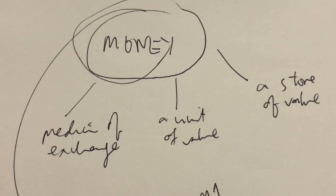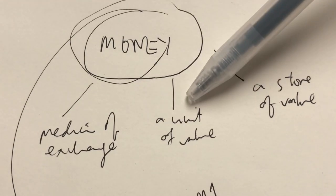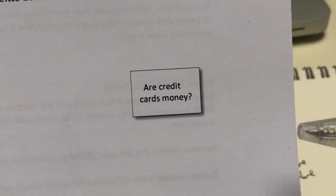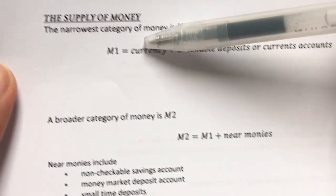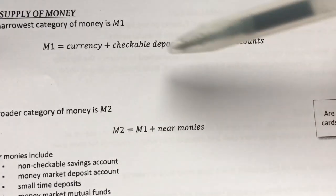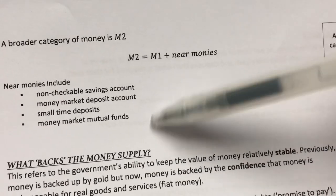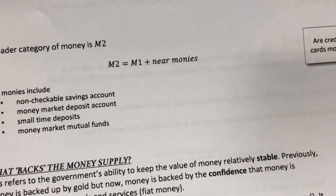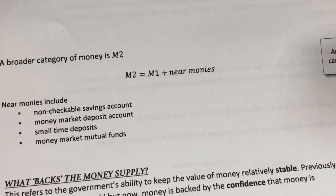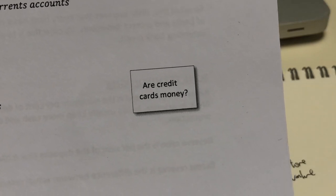After knowing about all of the functions of money, which are as a medium of exchange, as a unit of value or account, and as a store of value, are credit cards money? The answer is relatively simple. Credit cards do not fall under any of the categories of money. It's not M1 because credit cards are not currencies and they're also not checkable deposits. Credit cards also aren't M2 because they do not qualify as these near monies. And credit cards are also not M3. Therefore, credit cards aren't money, although it is a means of postponing payment for a short period of time.